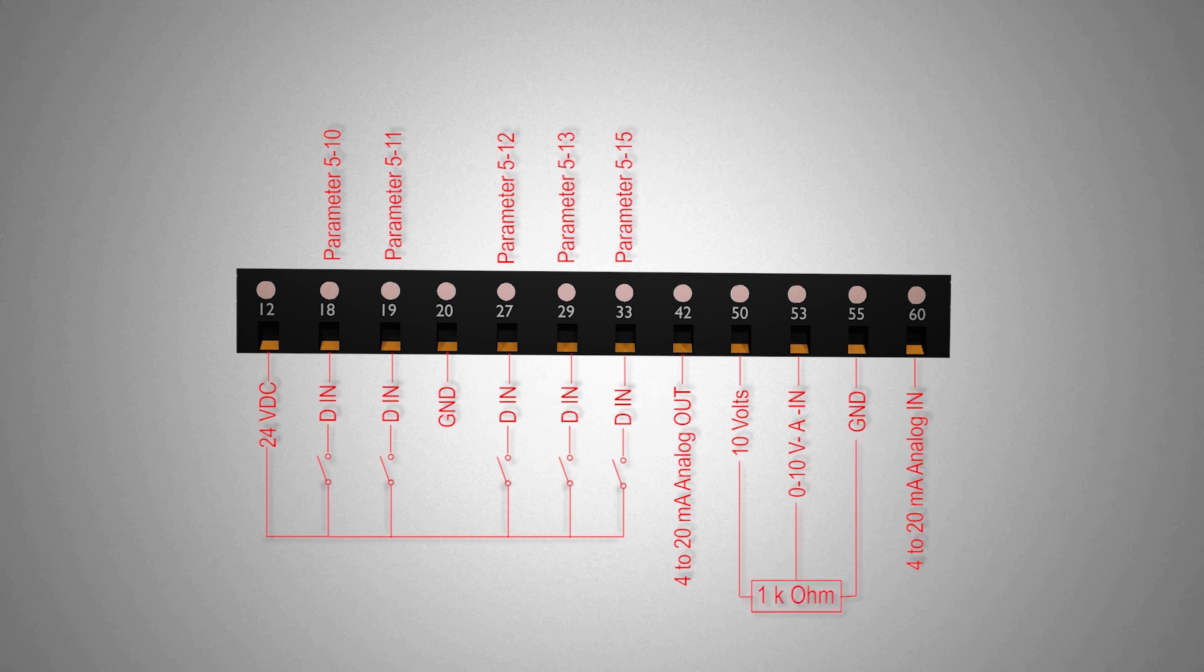Terminals 50, 53 and 55 are used to connect a potentiometer to the VFD to inject 0 to 10 volts analog signal at the analog input of the VFD. Terminal 53 analog input can be configured and programmed as a frequency reference input using parameter menu 3-15 and menu 6-1.